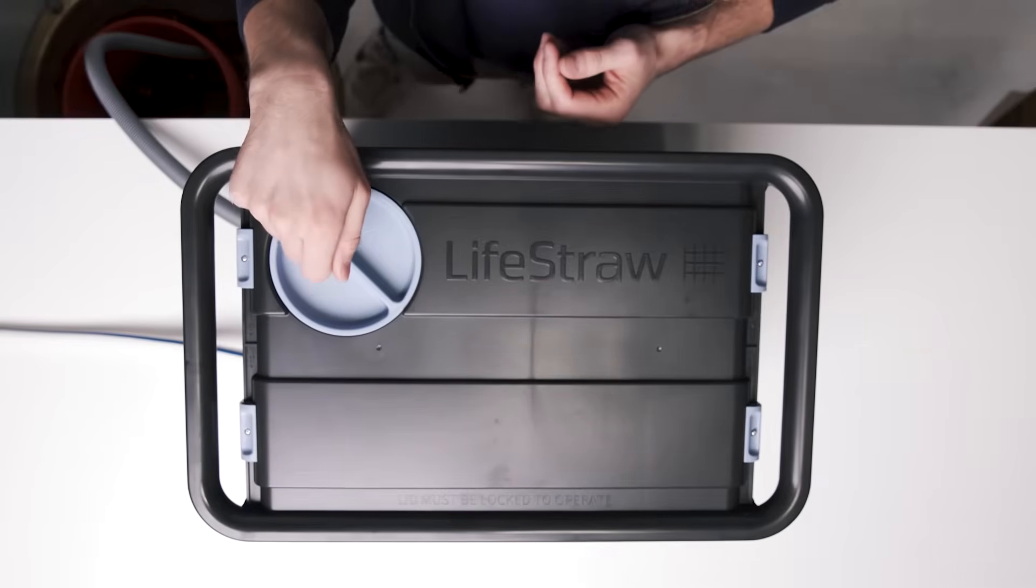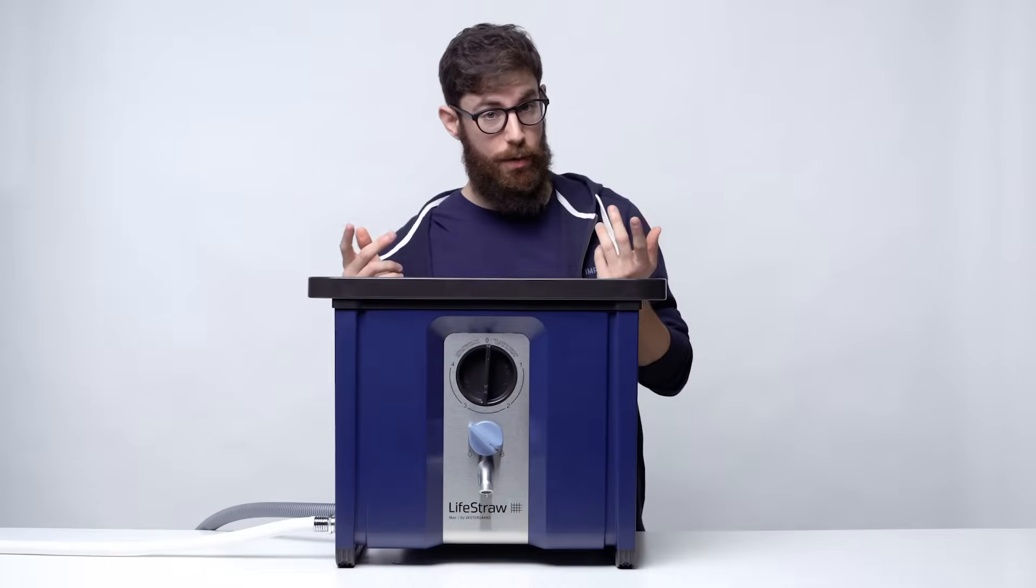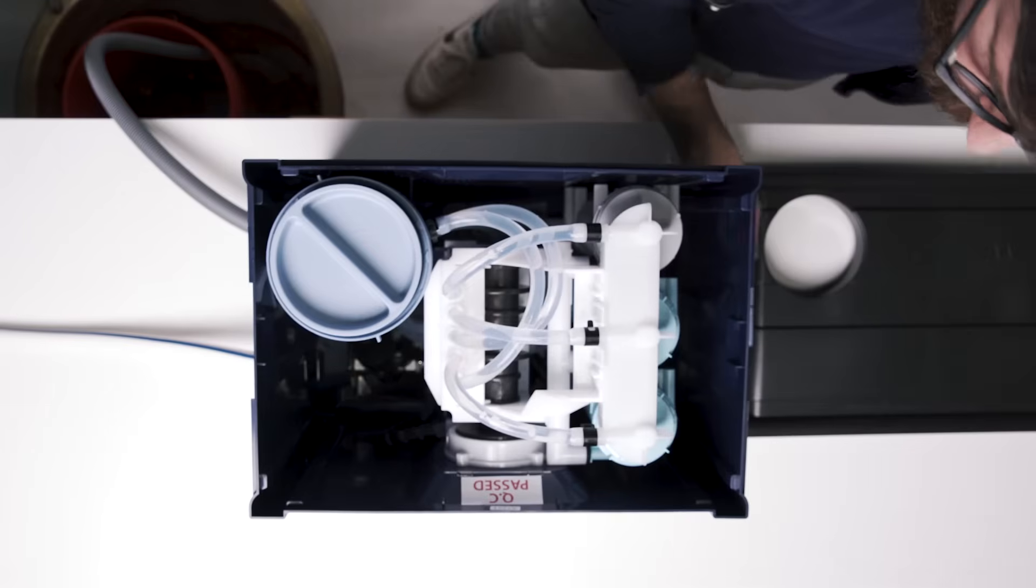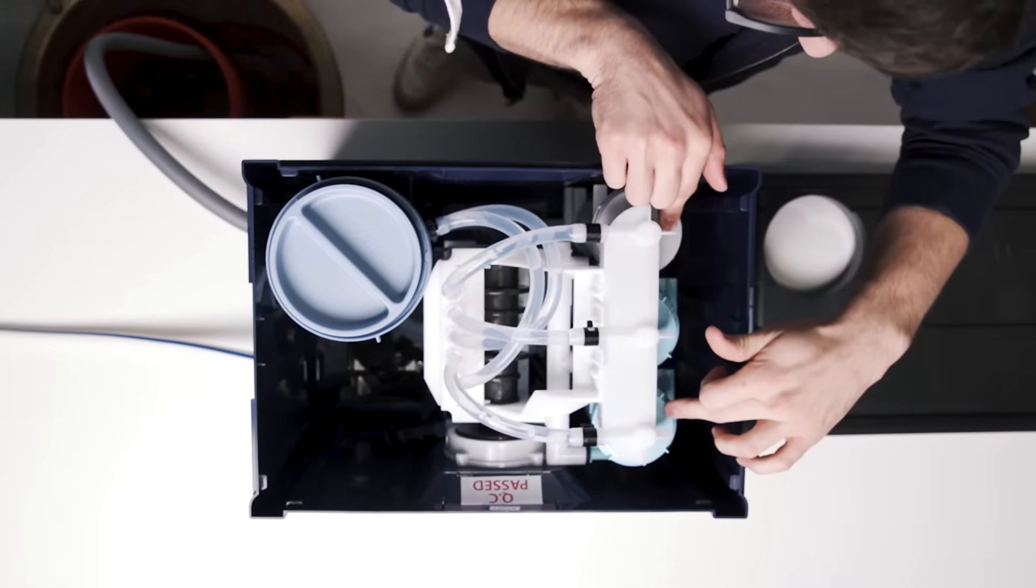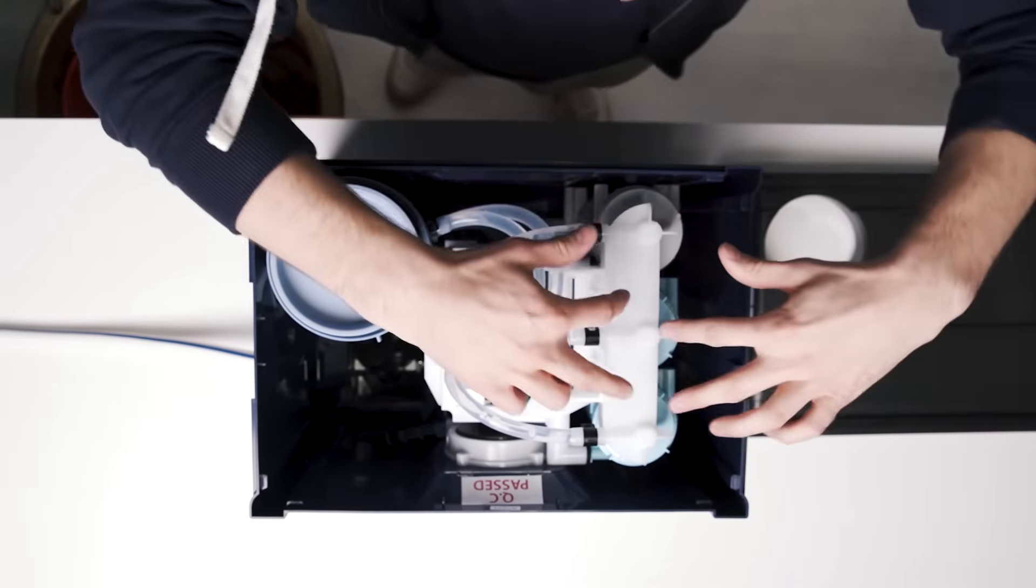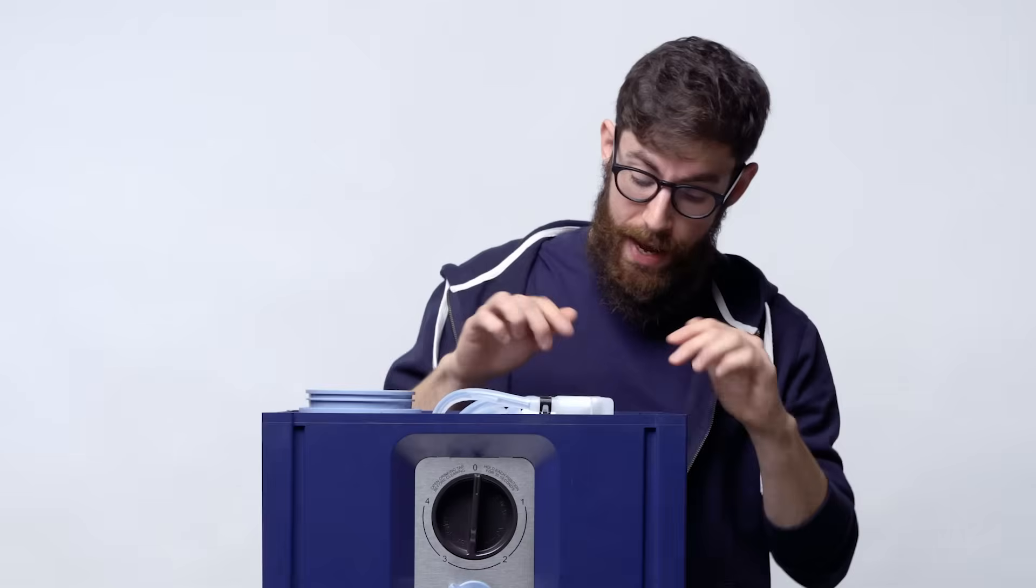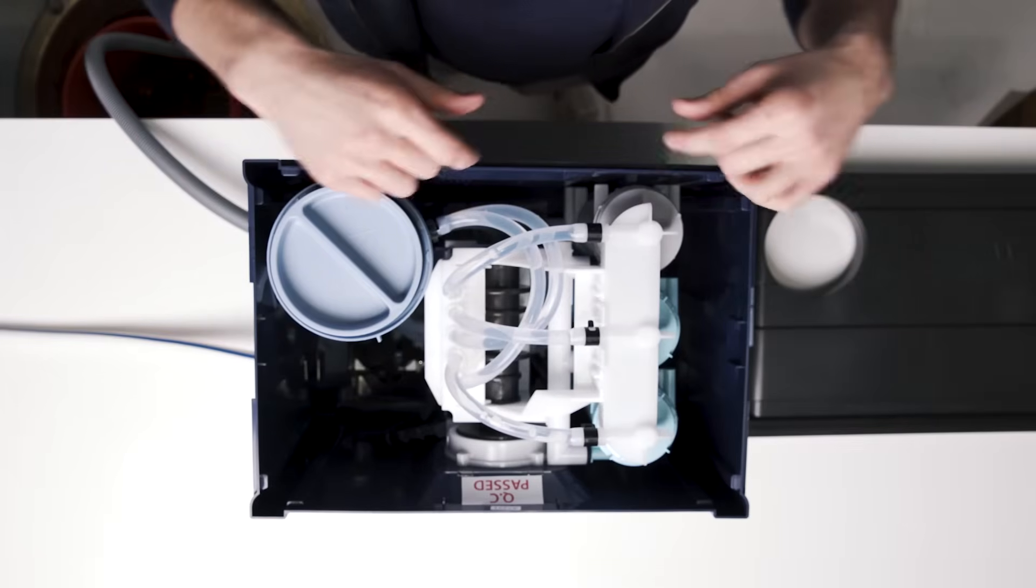Second thing is your pre-filter cap. Make sure it's fastened down all the way. It'll stop turning when it's done. On the inside, you have your filter bridge and your three filter cartridges. Make sure that your filter bridge is all the way down. If you notice any leaking around any of your filters, it might be time to replace or reseat those filters.